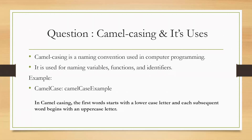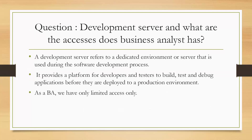Question 14: What is camel casing and its uses? Camel casing is a naming convention used in computer programming for naming variables, functions, and identifiers. In camel case, the first word starts with a lowercase letter and each subsequent word begins with an uppercase letter.